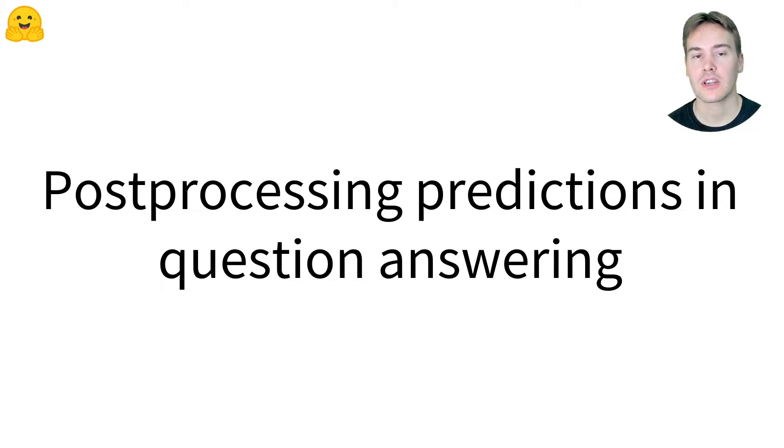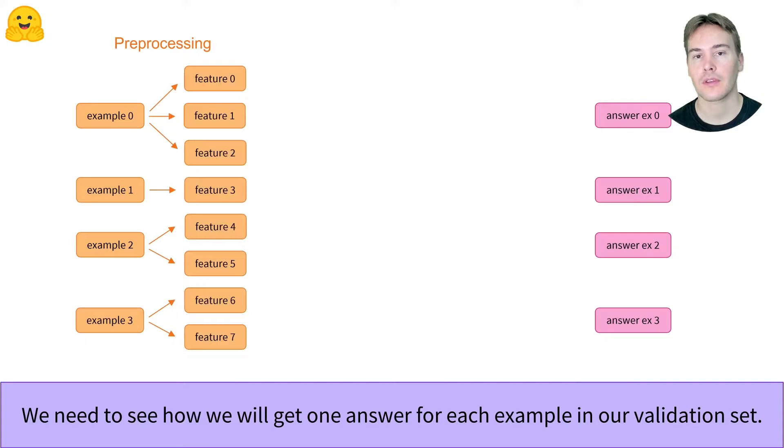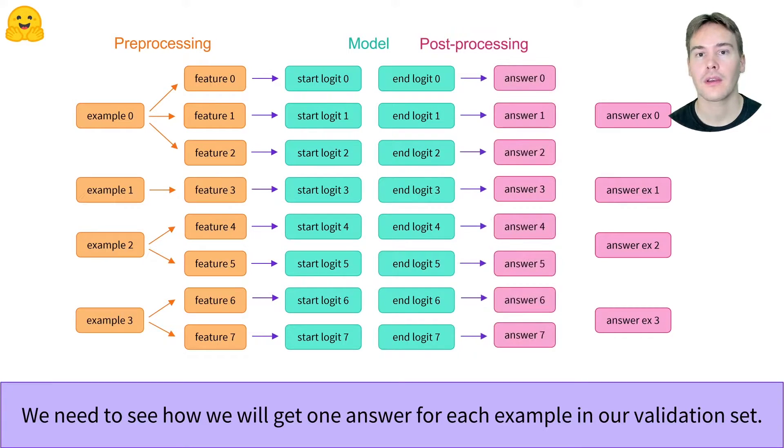The post-processing step in a question answering task. When doing question answering, the processing of the initial dataset implies splitting the examples into several features, which may or may not contain the answer. Passing both features through the model will give us logits for the start and end positions, since our labels are the indices of the tokens that correspond to the start and end of the answer. We must then somehow convert those logits into an answer, and then pick one of the various answers each feature gives to be the answer for a given example.